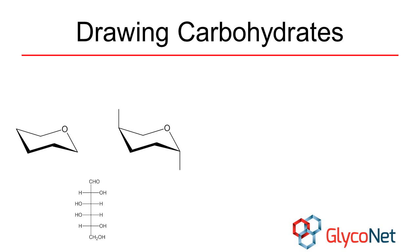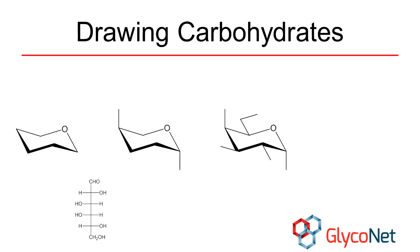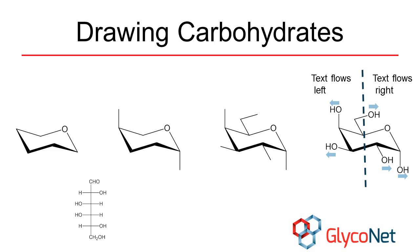Axial bonds should be straight up and down, while equatorial bonds are parallel to two other bonds within the ring. You can now add in the hydroxyl groups themselves, being sure to use a relatively large font. The text on the left-hand side of the molecule should flow to the left, while text on the right-hand side should flow right. It is not necessary to show the hydrogens, unless you have a specific reason to draw attention to them.